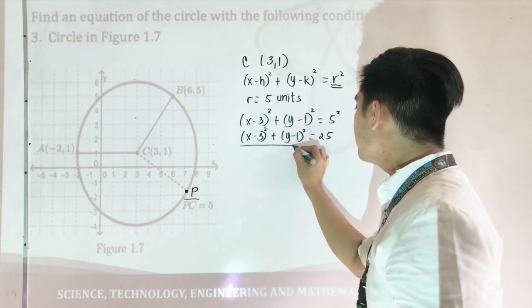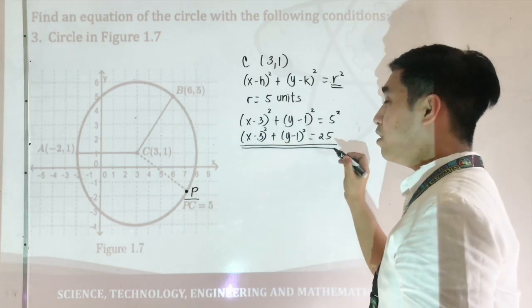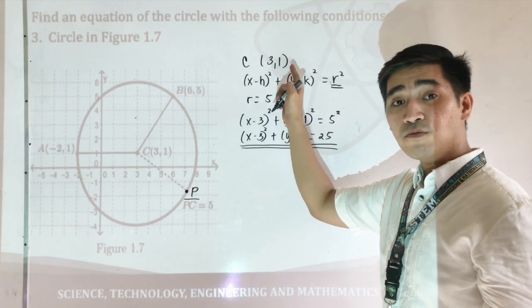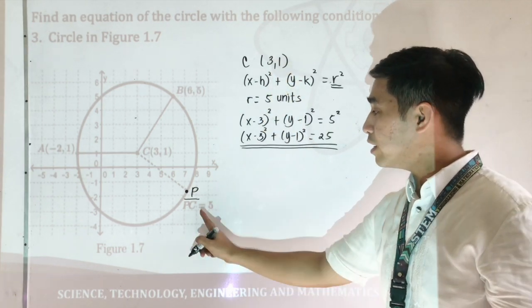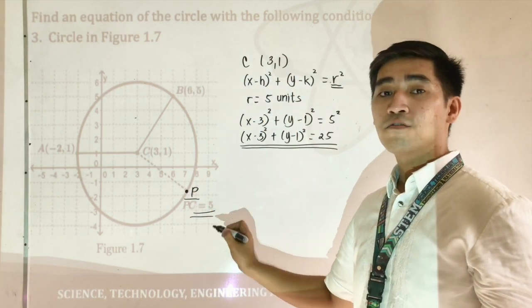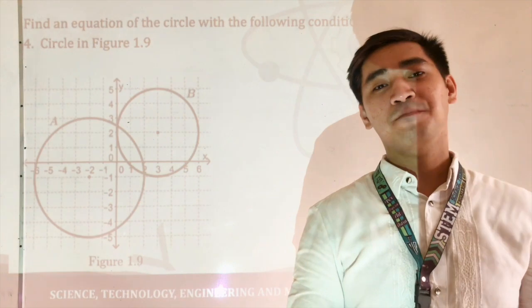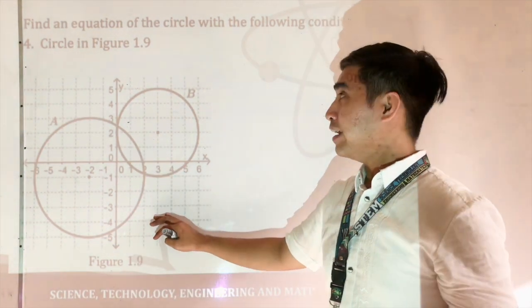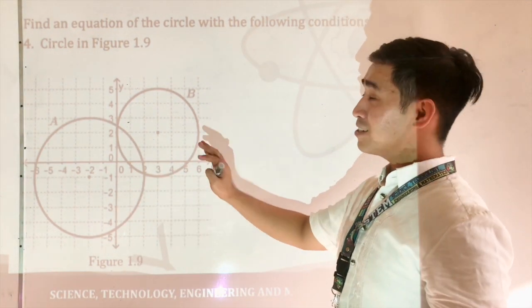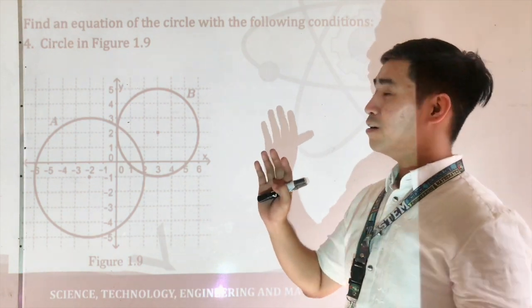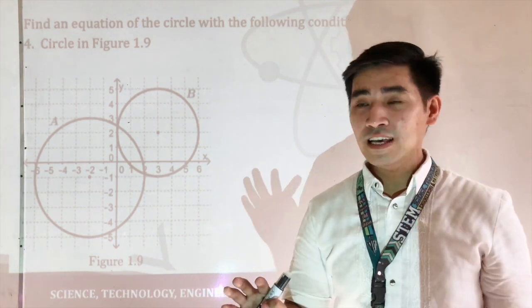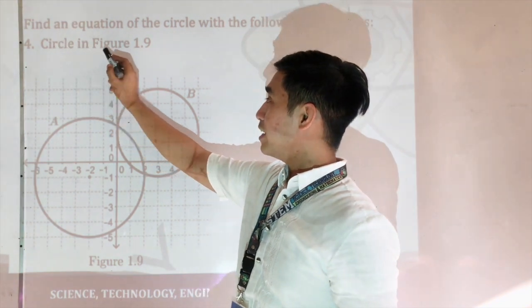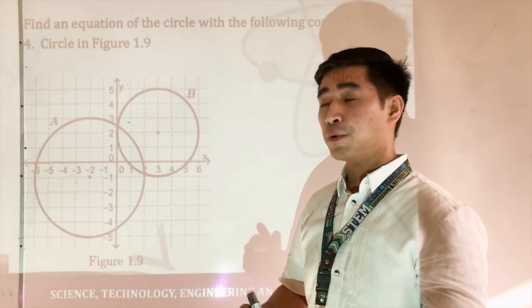And this is now the standard equation of the circle with the center located at 3, 1, and the radius equal to 5. For example number 4, again, we are given a graph and we're asked to determine the standard equation of the circle with this condition — that the circle is in figure 1.9.